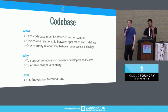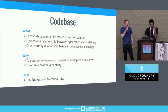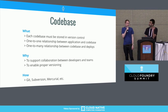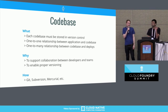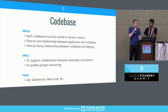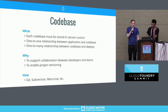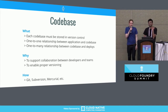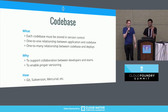Let's get started with an easy one. The first factor is codebase. The codebase factor states that every application must have a single corresponding codebase, and that codebase must be stored in version control. I hope everyone is already doing this. If you're not, you really should be — to allow for proper versioning and to support collaboration between teams and developers. Just use Git, basically.